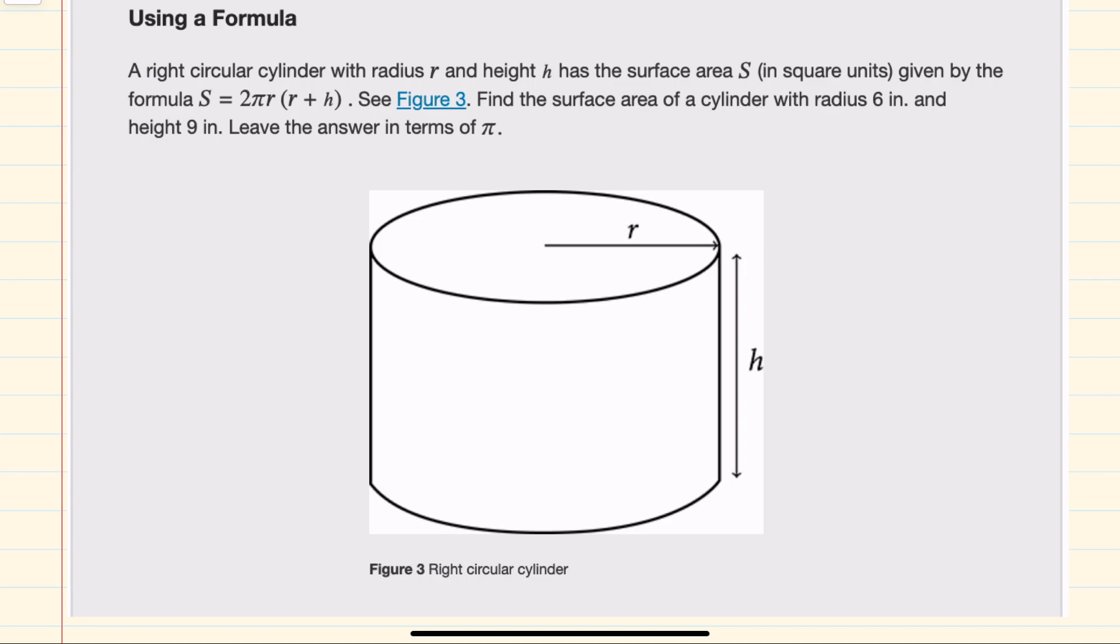and we're asked to find the surface area of the cylinder when the radius is 6 inches and the height is 9 inches. So our radius would be 6, and our height would be 9.